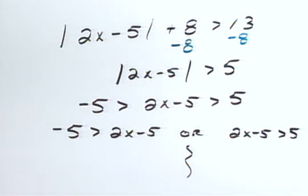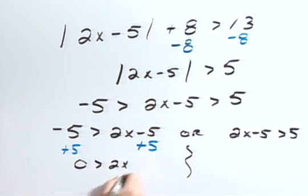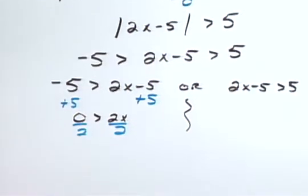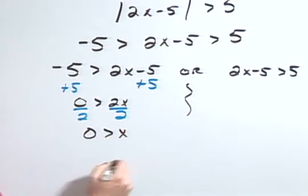Now I can solve these two inequalities separately. Over here on the left, I can add 5 to both sides, so I would have 0 is greater than 2x, and dividing both sides by 2, I find that 0 is greater than x.